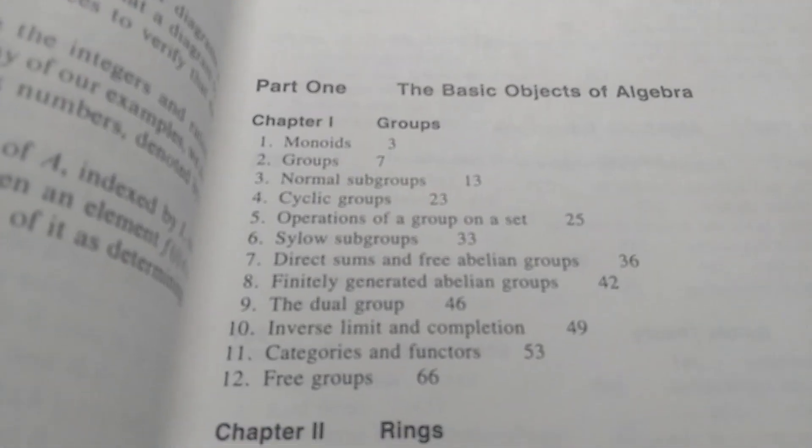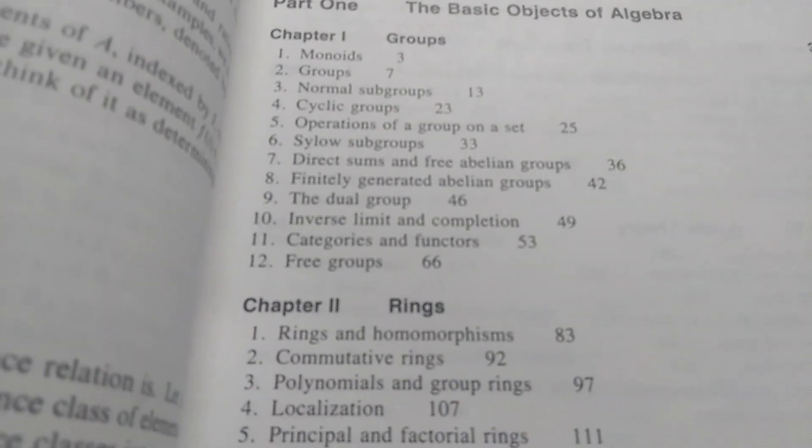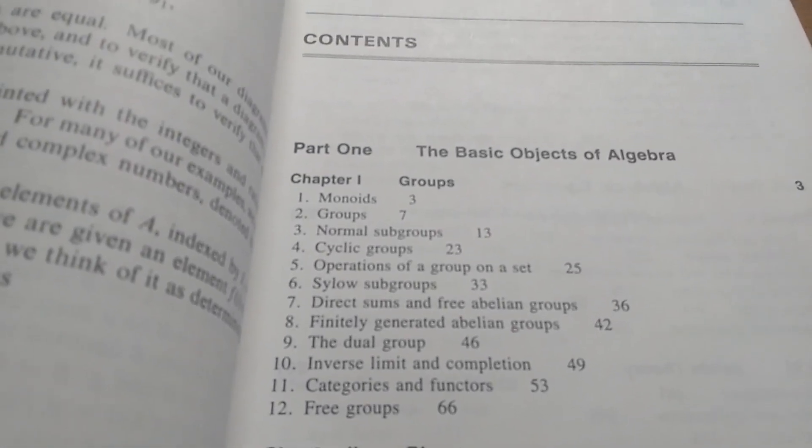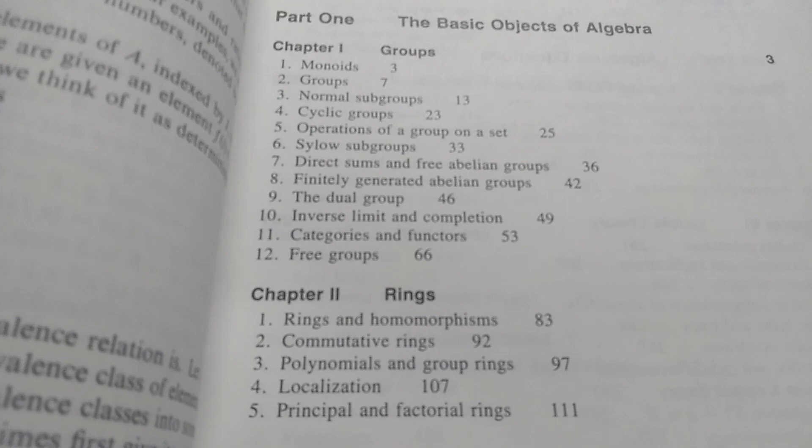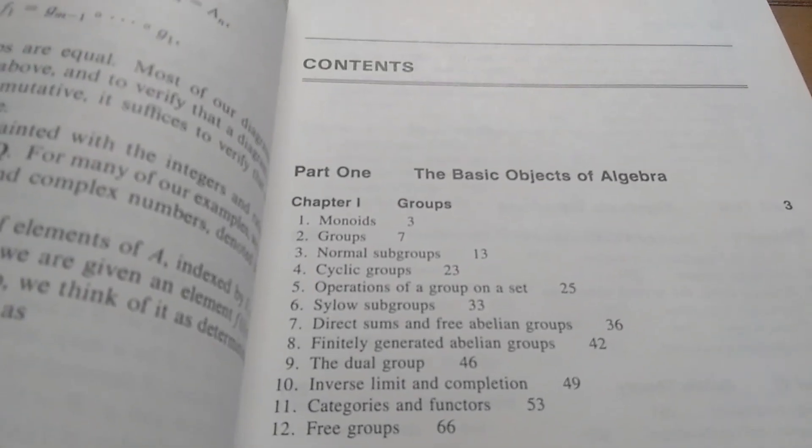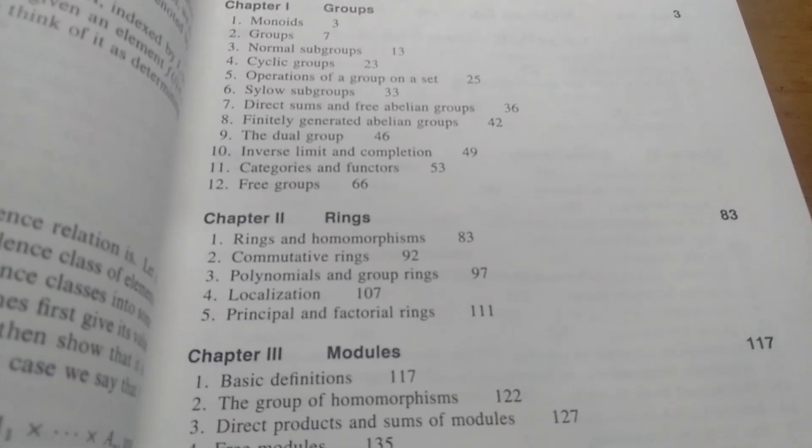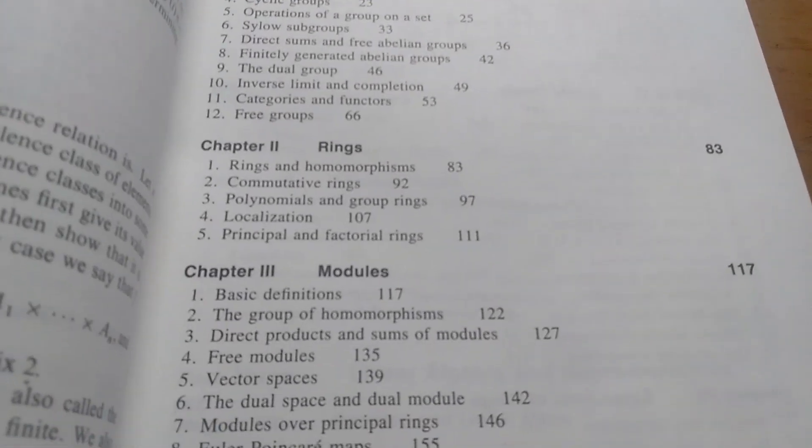That's on page three. Categories and functors, free groups. So he does all of group theory in 63 pages, 66 minus three or so. From page three to page 66, he does all of group theory. Then rings are page 83 to page 111.